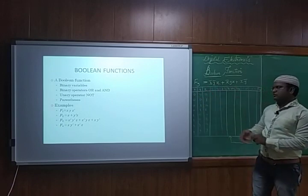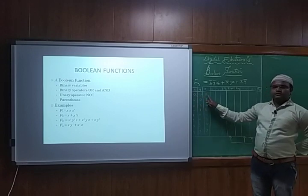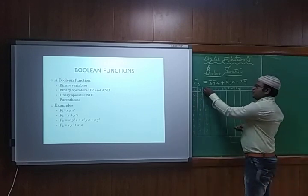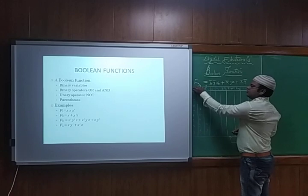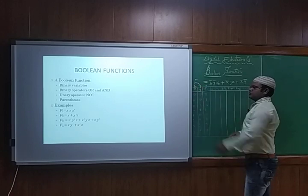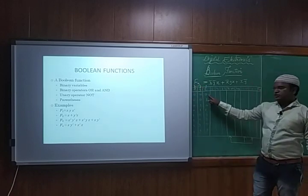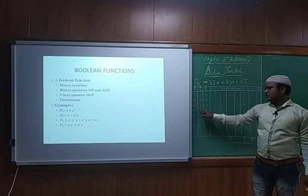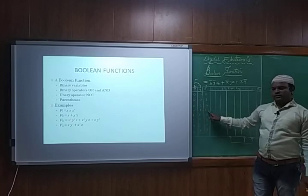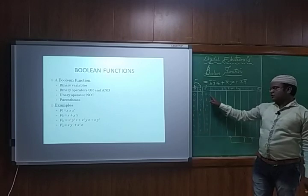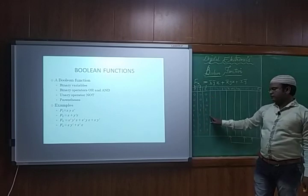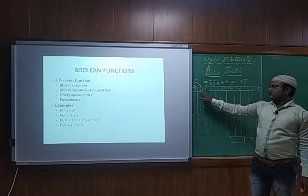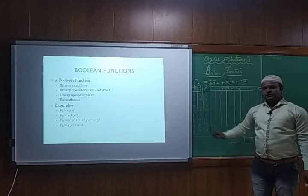The combinations for three inputs will be from 0,0,0 up through all 8 combinations, since it is 2 power 0, 2 power 1, 2 power 2. So we have taken all input combinations: 0,0,0; 0,0,1; 0,1,0; 0,1,1; 1,0,0; 1,0,1; 1,1,0; 1,1,1 — that is minterm 0 through 7. So 1 plus 2 plus 4 makes it 7.